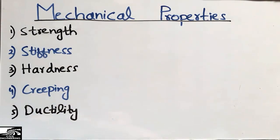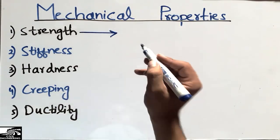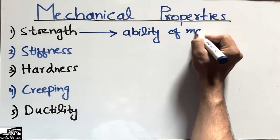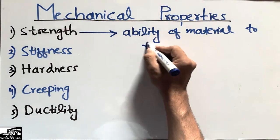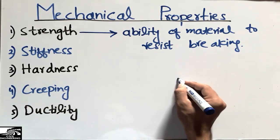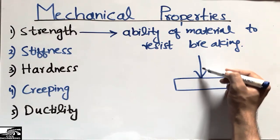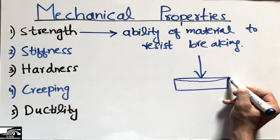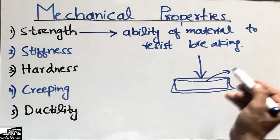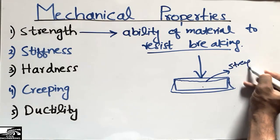The first mechanical property of material is strength. Strength is the ability of a material to resist breaking. For example, consider a material block and a load acting on this block — the block will take the load until it fractures and breaks. The load-resistant capability of this material up until it breaks, we call the strength of the material.